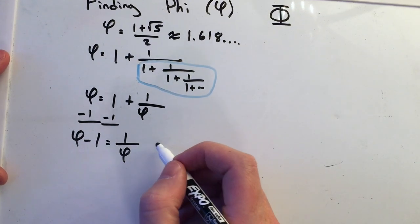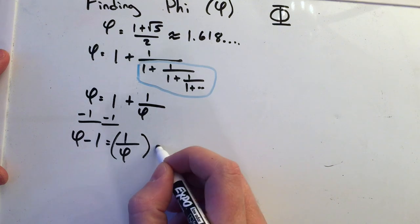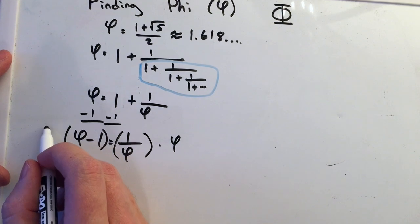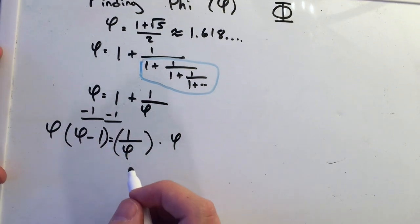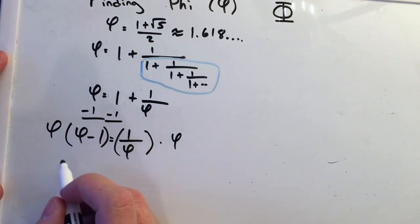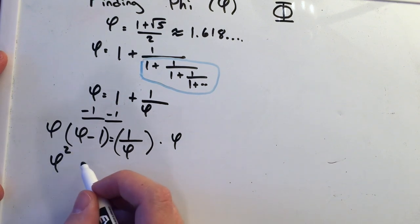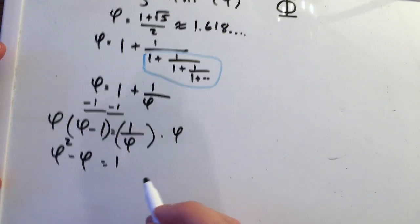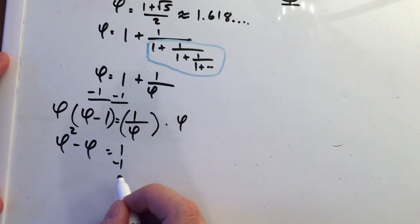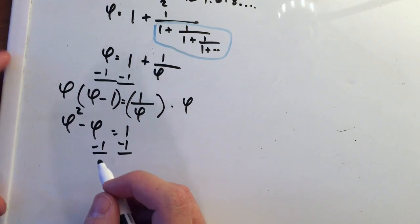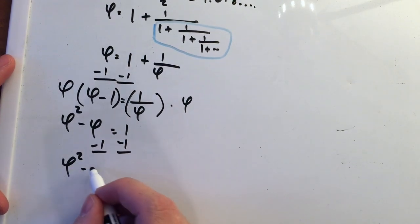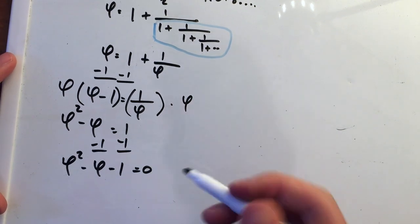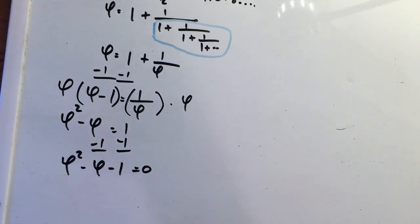And then we can multiply both sides by phi. And we distribute this, we have phi squared minus phi equals one. And then again, we can subtract one from both sides. And we're left with phi squared minus phi minus one equals zero. Now right here, something should be clicking your head. We have a quadratic.